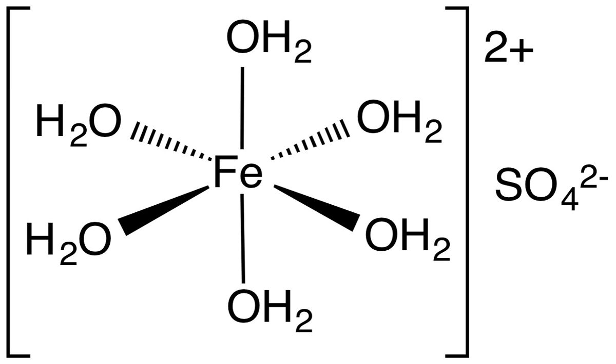2FeSO4 → Fe2O3 + SO2 + SO3. Like all iron(II) salts, iron(II) sulfate is a reducing agent. For example, it reduces nitric acid to nitrogen monoxide and chlorine to chloride. 6FeSO4 + 3H2SO4 + 2HNO3 → 3Fe2(SO4)3 + 4H2O + 2NO. 6FeSO4 + 3Cl2 → 2Fe2(SO4)3 + 2FeCl3.